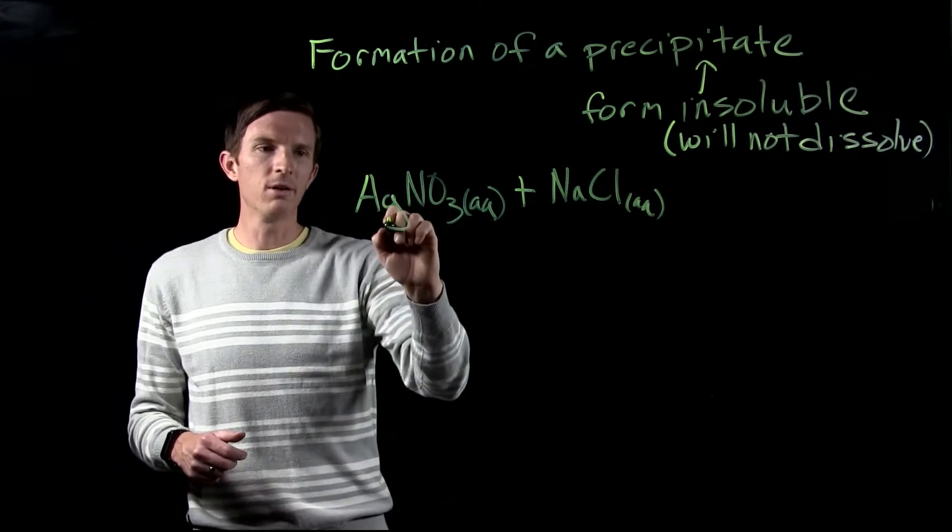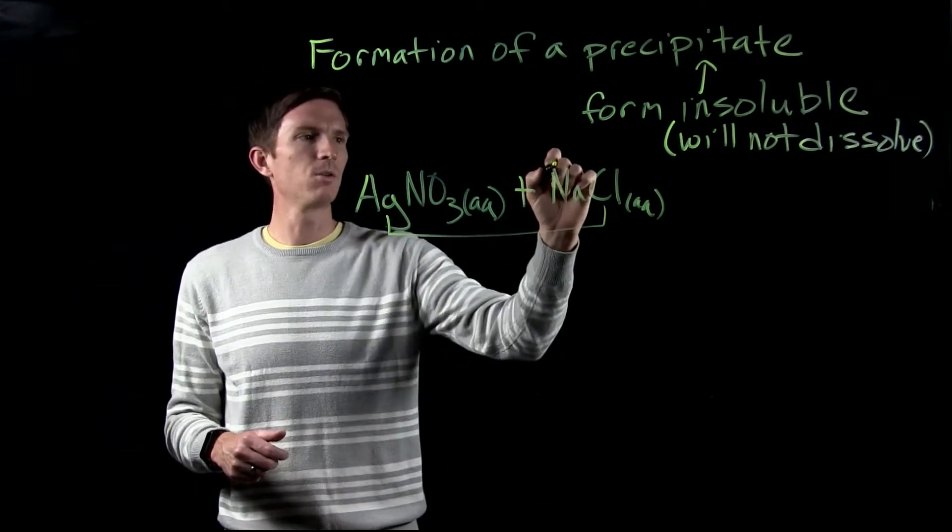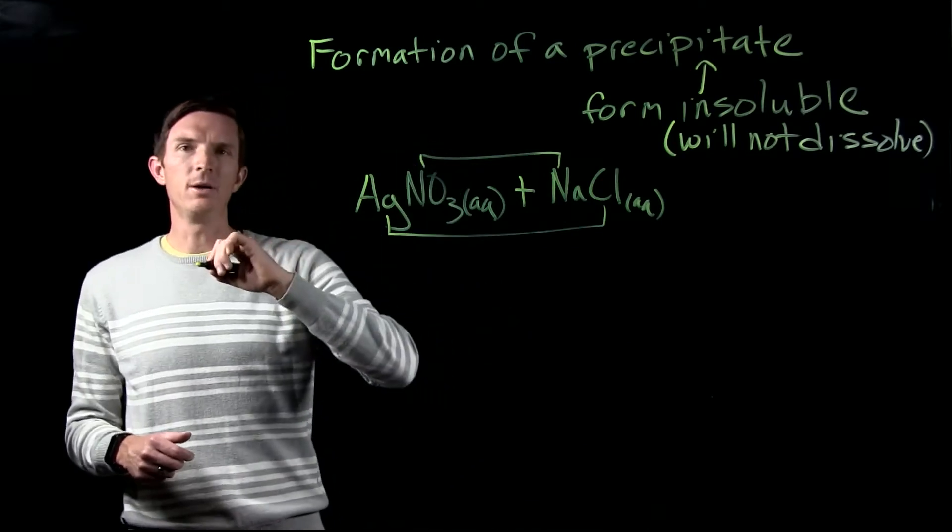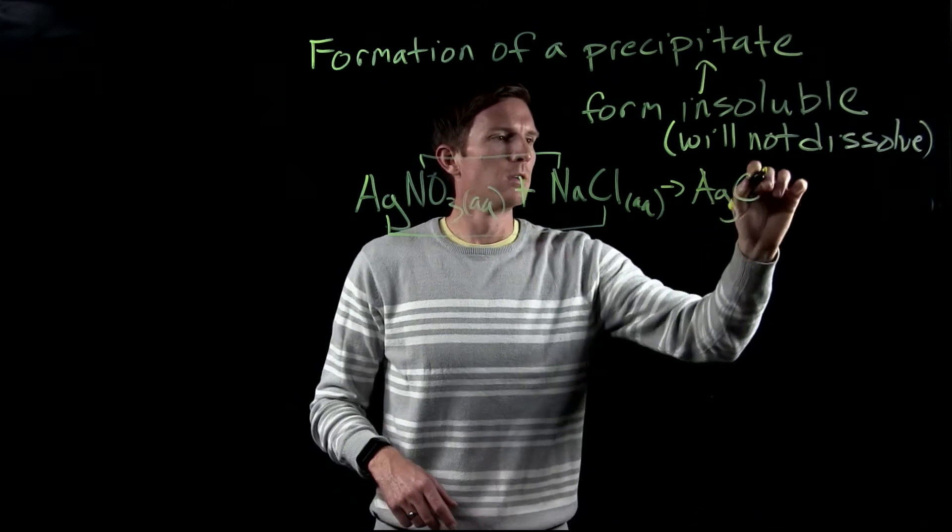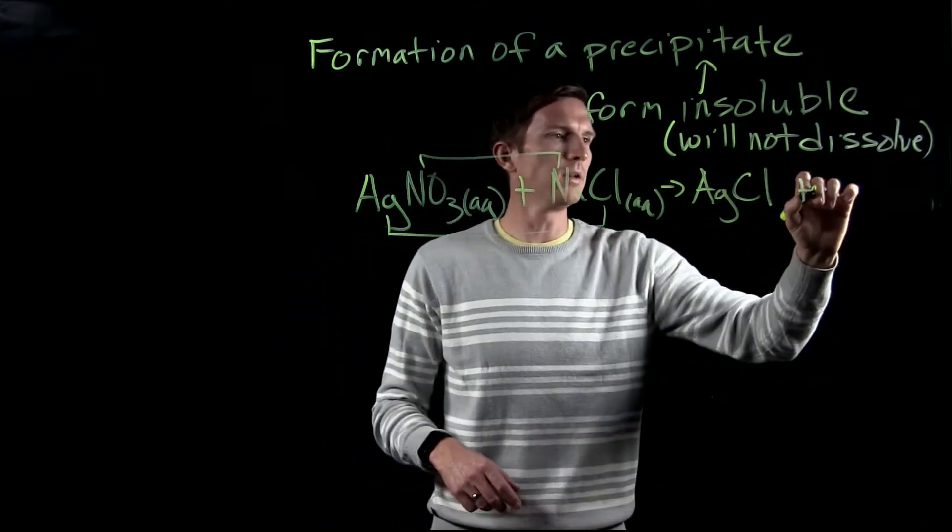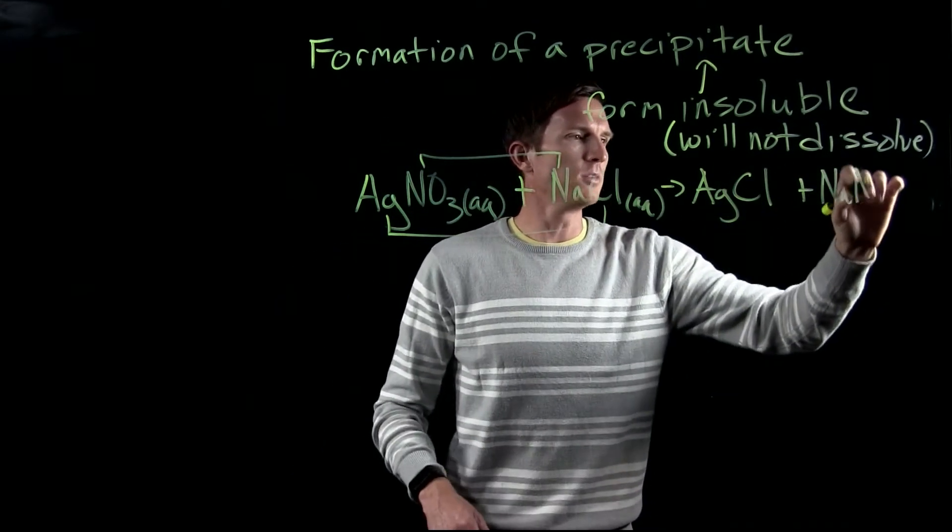So again, we're going to look at what are we going to form? Silver combining with chloride, sodium combining with nitrate as our two new products. So we end up getting silver chloride and sodium nitrate.